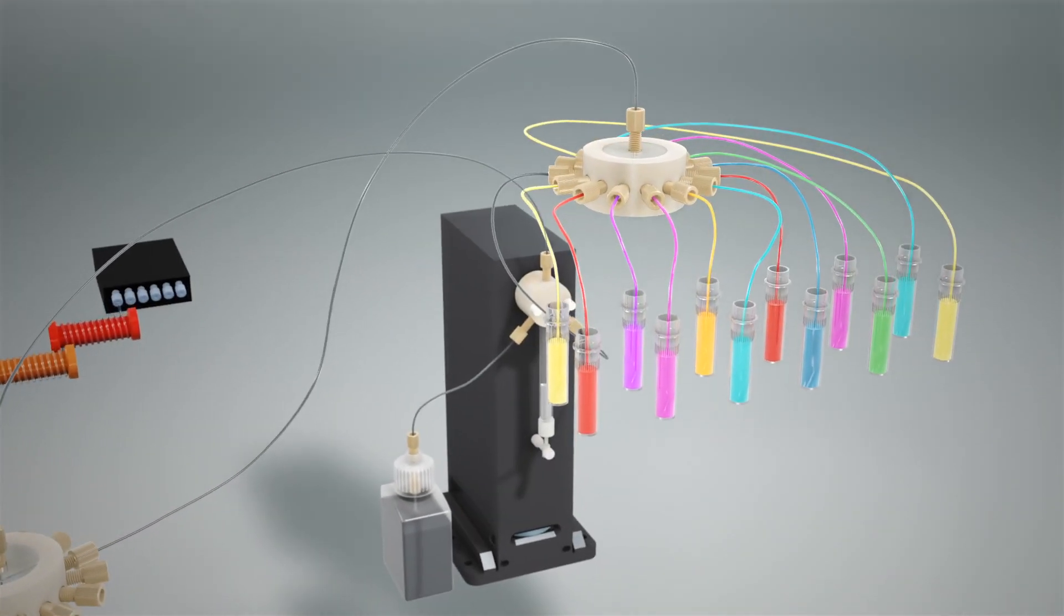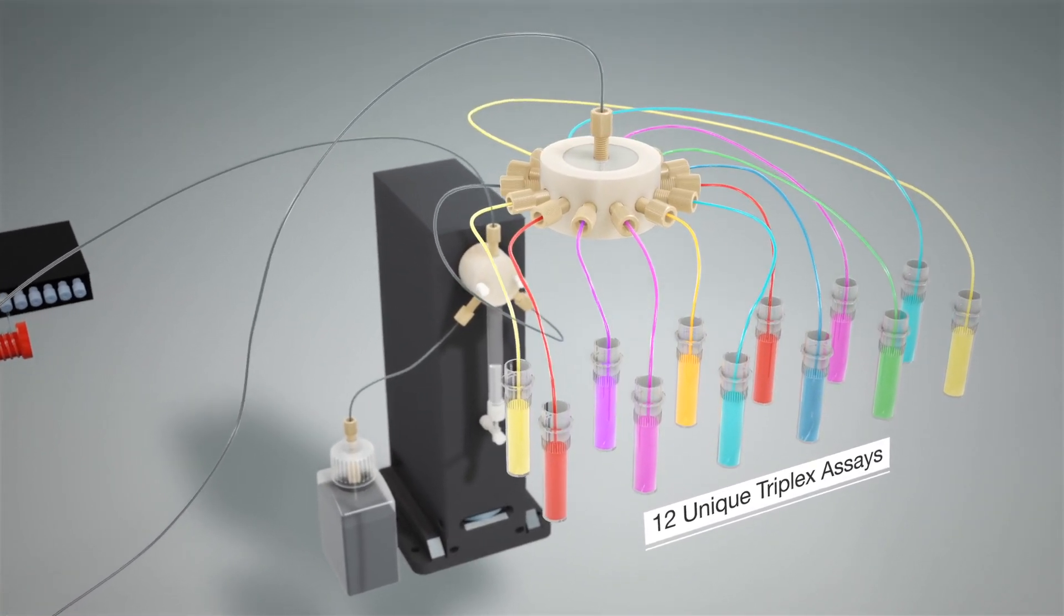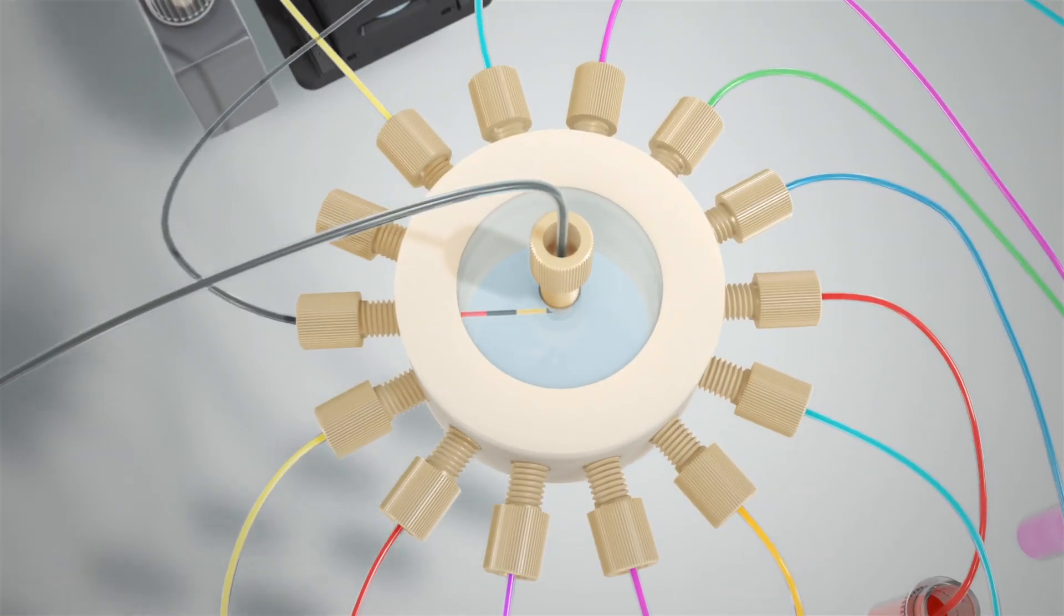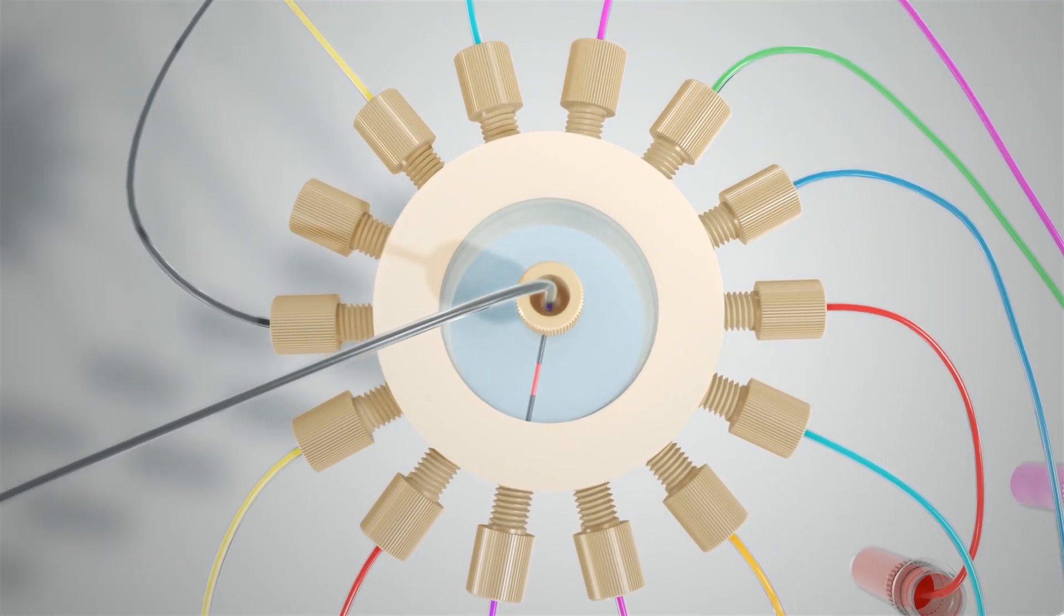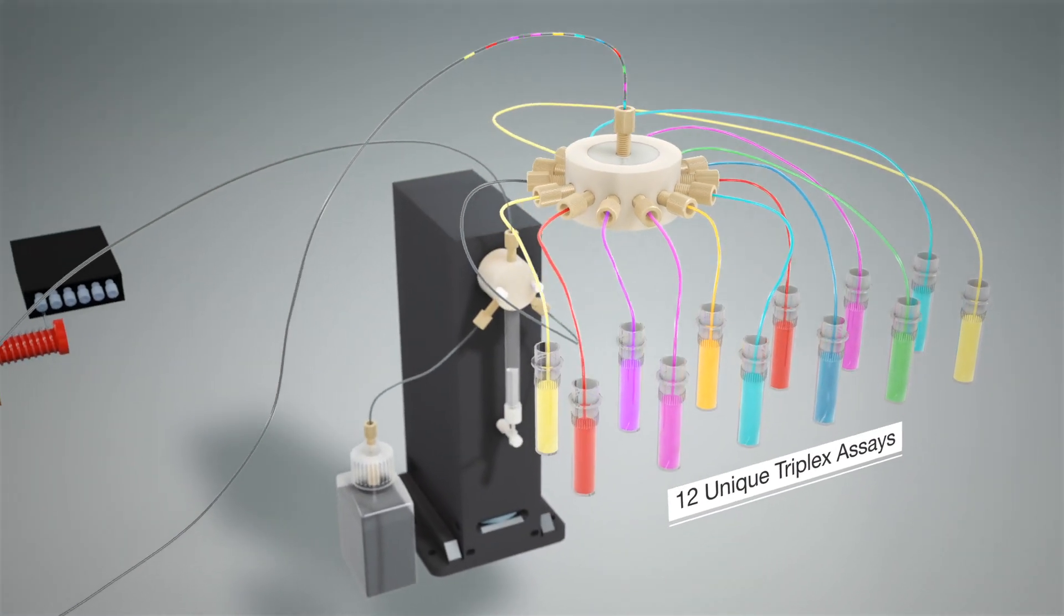The instrument then assembles 12 unique triplex assays that are kept separate by intervening oil slugs. Each triplex assay contains primers and probes for a positive control and two pathogen targets.